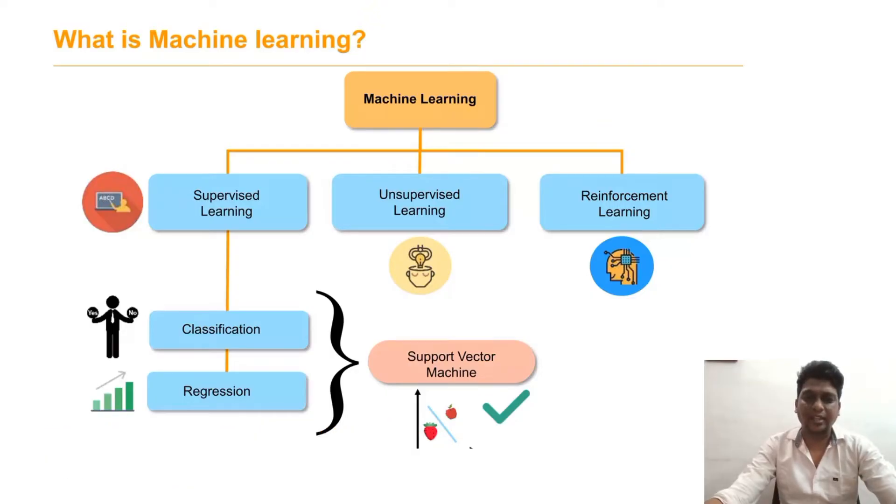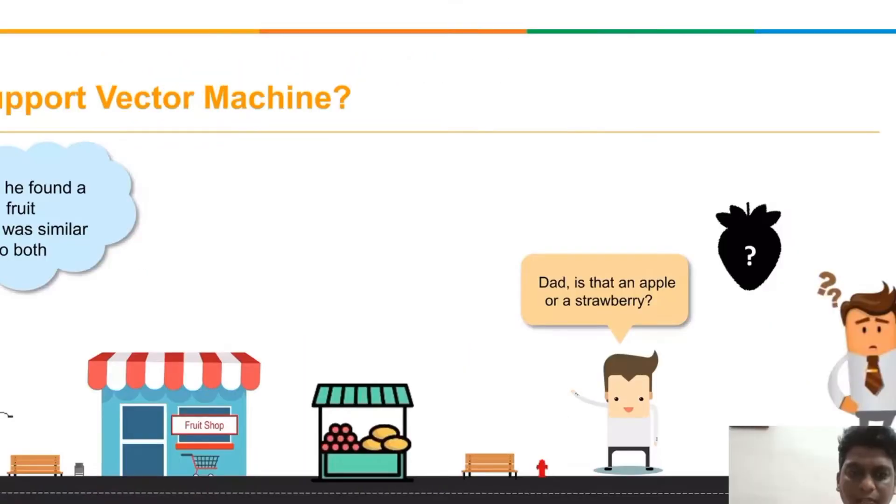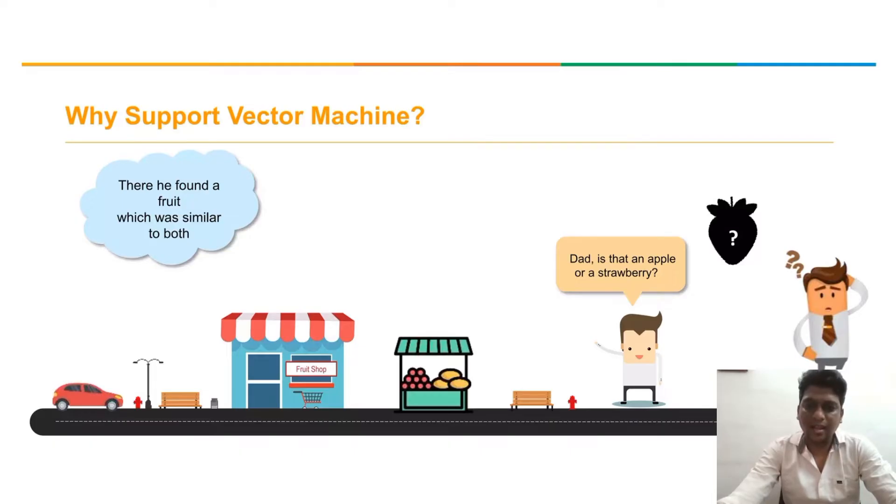Let's see an example. A boy went with his father to buy a fruit. He found that the fruit is similar to another one. Now he asked his dad whether it is an apple or strawberry.